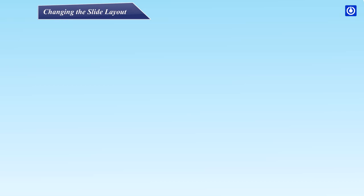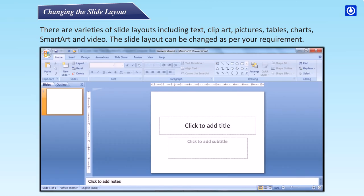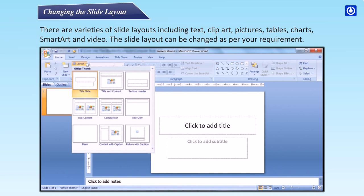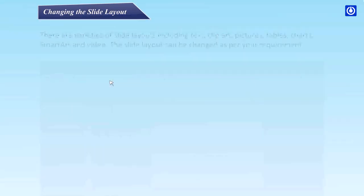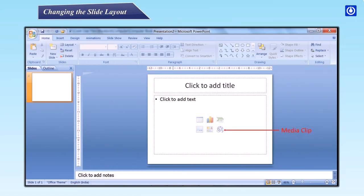Changing the slide layout: There are varieties of slide layouts including text, clip art, pictures, tables, charts, smart art, and video. The slide layout can be changed as per your requirement. Step 1 – Click on the Home tab. Step 2 – Click on the Layout button. Step 3 – Choose the layout from the Layout Gallery, which includes Table, Chart, Smart Art Graphic, Placeholder, Picture, Clip Art, and Media Clip.